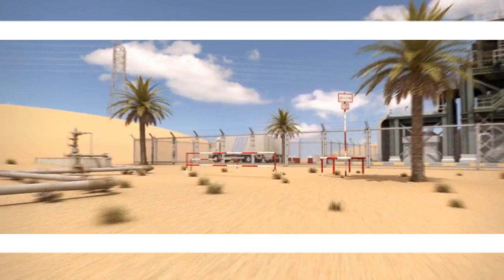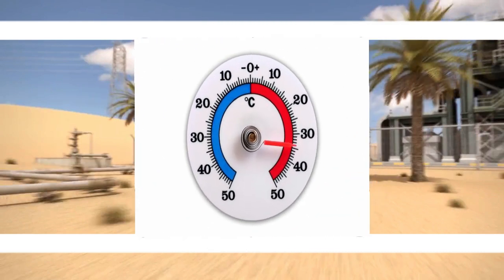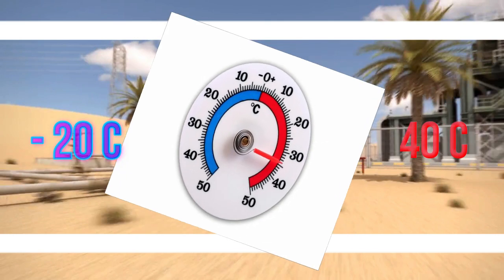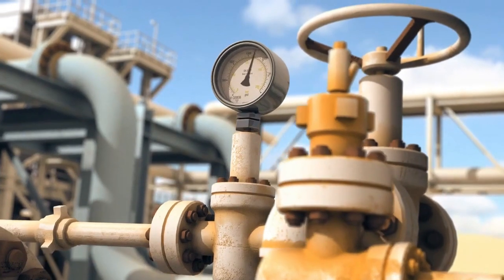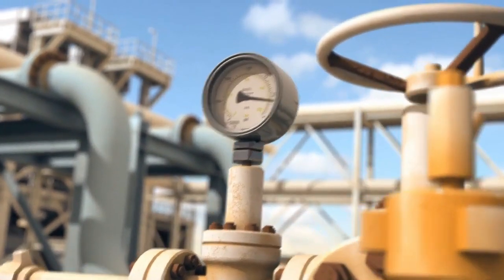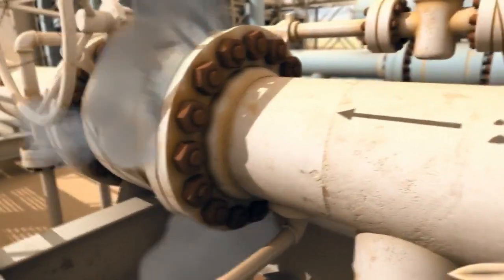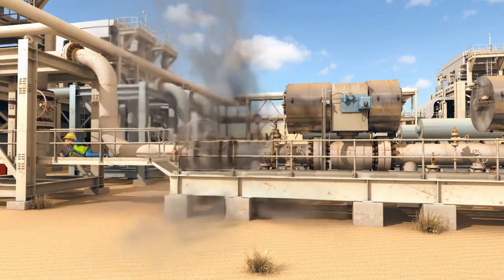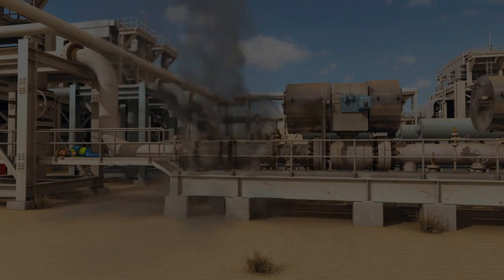Type N apparatus is normally designed for use in ambient temperatures in the range of minus 20°C to plus 40°C, unless otherwise marked. In Zone 2 hazardous locations, the presence of a flammable gas or vapor is not likely to be present, or if it is present its duration will be for a short time only. This fact allows the use of less expensive methods of protection — in other words, non-incendive or Type N protection.